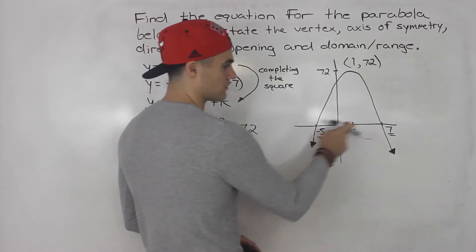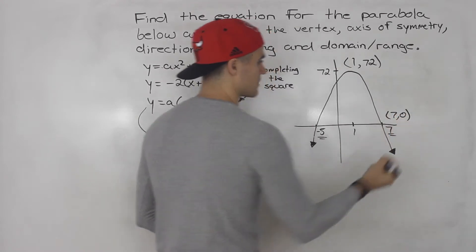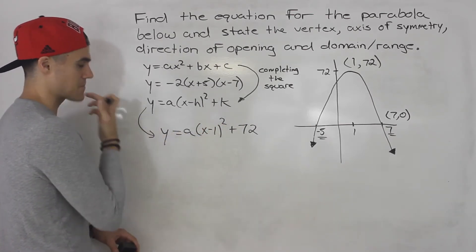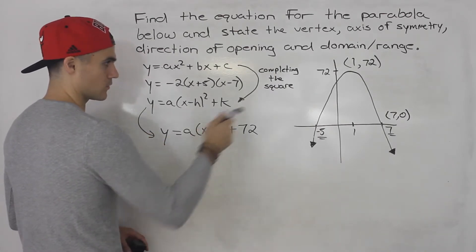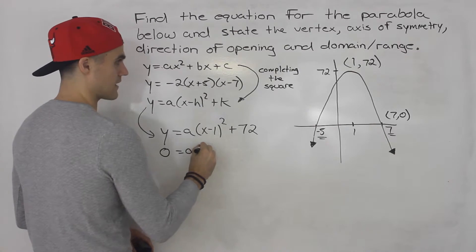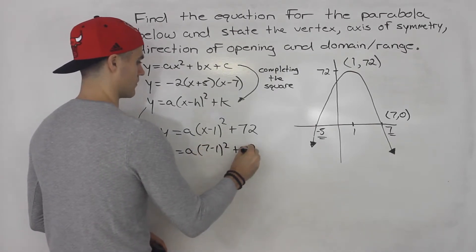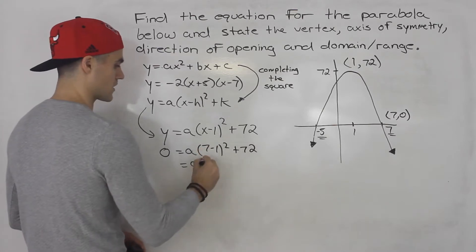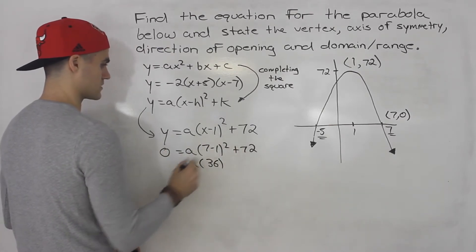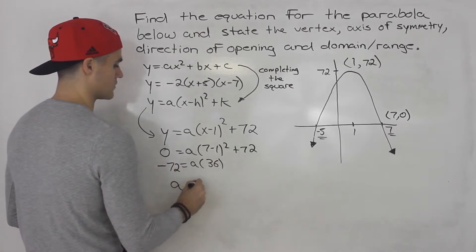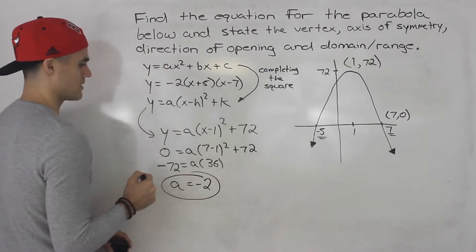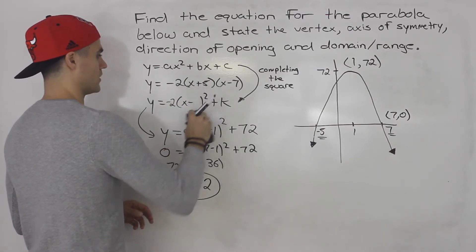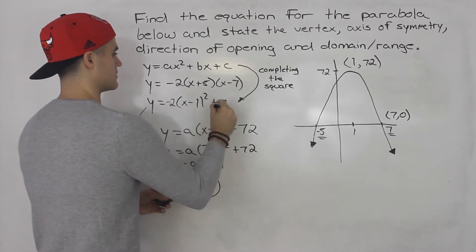An easy point to pick is one of the intercepts. Let's use (7, 0). No matter which intercept you pick — negative 5 or 7 — you'll get the same a value. The y-value of the intercept is 0, and the x-value is 7. So: 7 minus 1 is 6, 6 squared is 36, then bring the positive 72 over so it becomes negative 72. The a value is negative 2 again. So the vertex form is negative 2(x minus 1) squared plus 72.